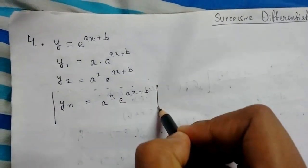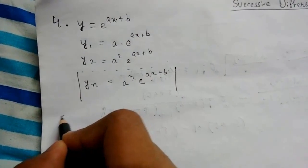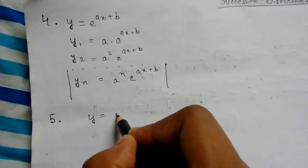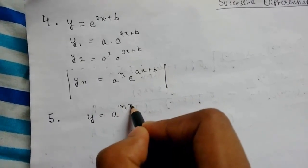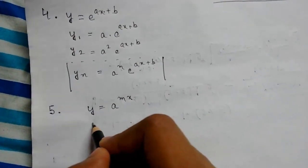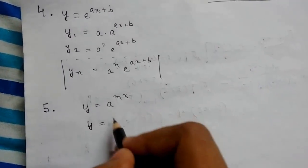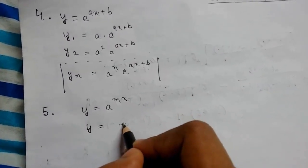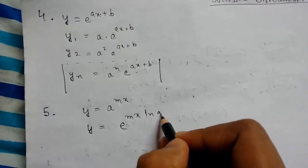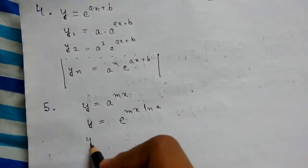Now number 5: y equals a to the power mx. We need to write y in another form, so we can write this as e to the power mx ln a. Now differentiating, y1 will equal m ln a times e to the power